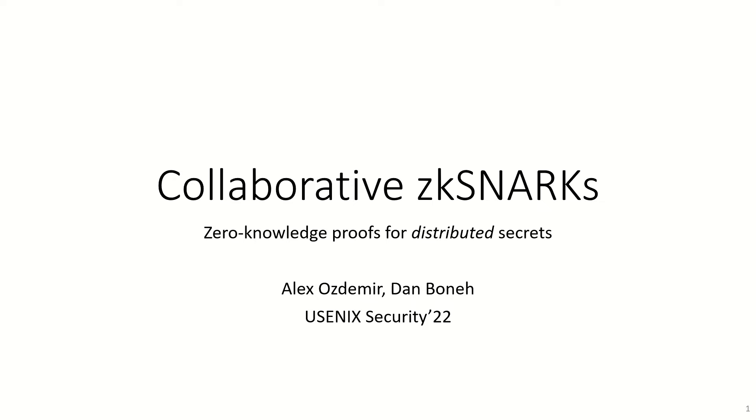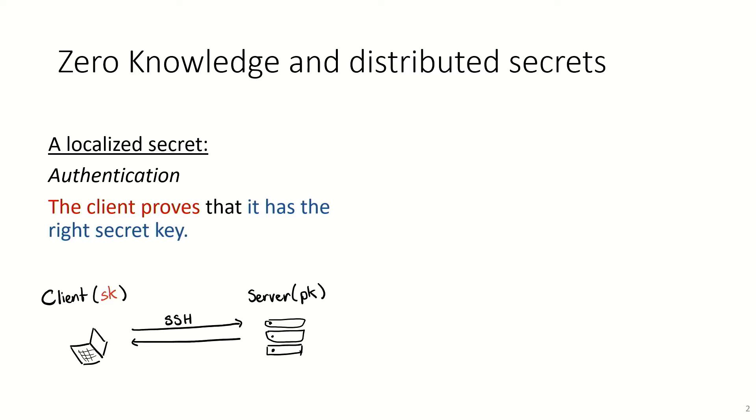It supports zero-knowledge proofs for distributed secrets. Traditionally, zero-knowledge applies to localized information. Consider, for example, authentication. In this scenario, some client wants to show to a server that the client has the right secret key. In this case, the secret information is the secret key, and it's held by one party. So traditional zero-knowledge tools apply. And indeed, a ZK-SNARK, like Jess was working with, would suffice to solve this problem.